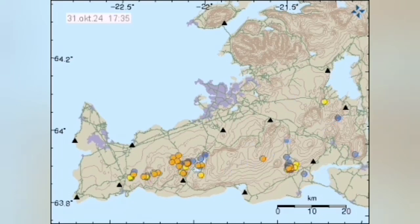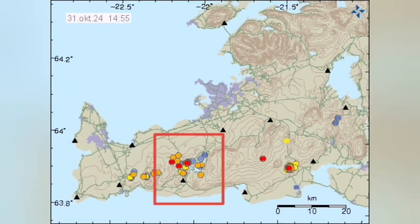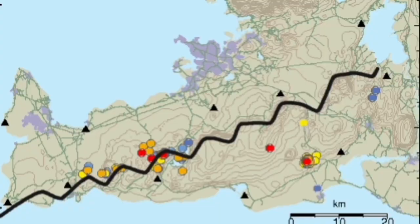Many of them are concentrated around this lake which we call Kleifarvatn, and that is forming along a series of the transform and extension faults that divide the boundary between Eurasia and North America.